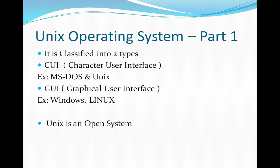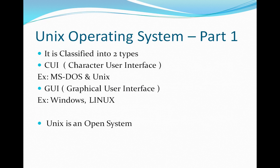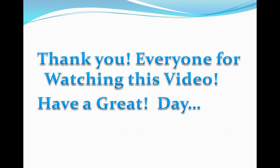To recap the UNIX introduction: we discussed what an operating system is, that UNIX is a multitasking and multi-user operating system, who the developers were, that it is also called system software, and that it is classified into two types — CUI and GUI — and is an open system.